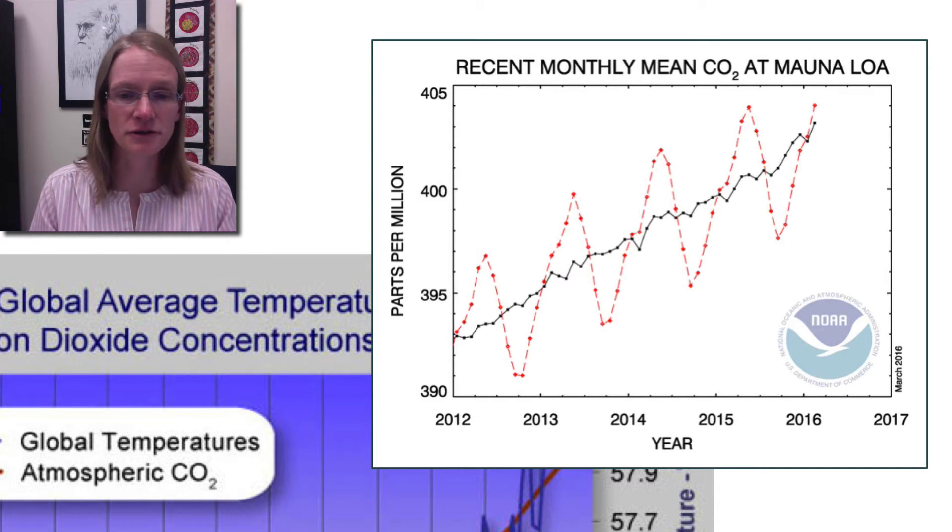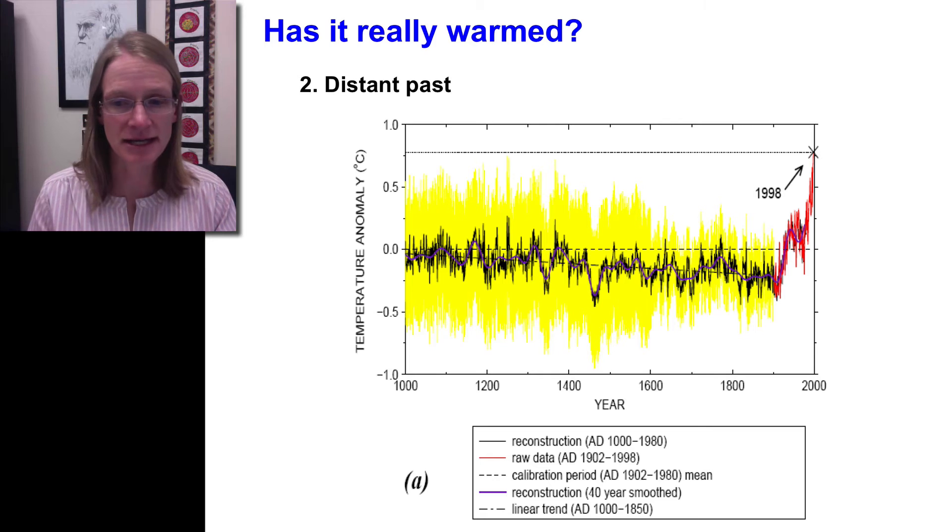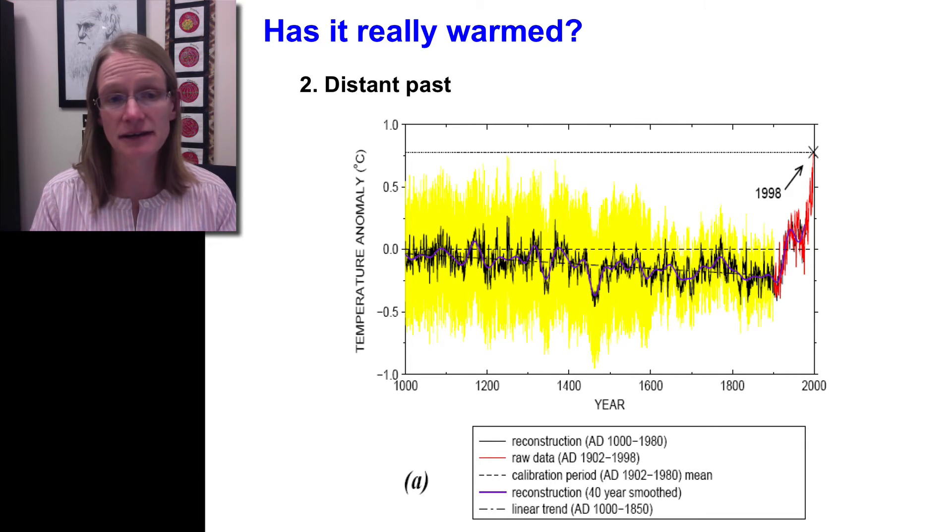Let's go back a little further into the distant past, about the past thousand years of history. This is often fondly called the hockey stick graph because of the shape of the relationship. On the right hand side we can see this blue trend surrounded by red error bars, which represent actual measurements from more recent history. Beyond that you can see this purple line with black and yellow surrounding it representing error around that. Those represent reconstructions from tree cores.